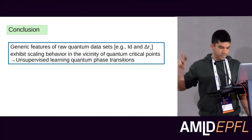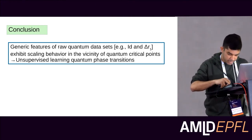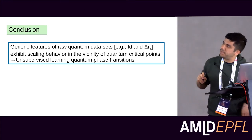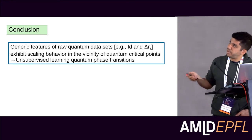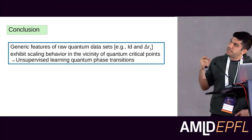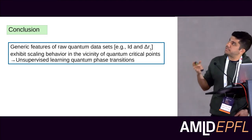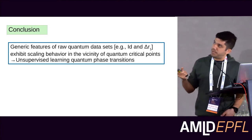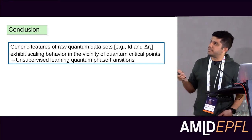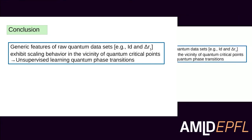In conclusion, the main point of this work is that geometric features of raw quantum data sets — specifically the intrinsic dimension and delta-one — exhibit scaling behavior in the vicinity of quantum critical points. This is, in a sense, an unsupervised learning approach to detecting quantum phase transitions. Thank you for your attention.